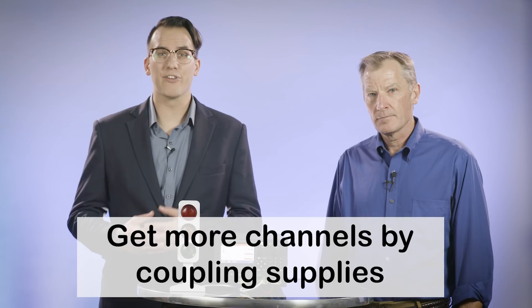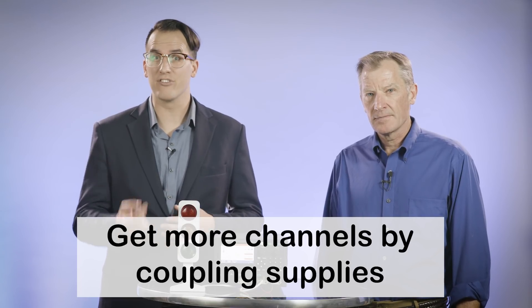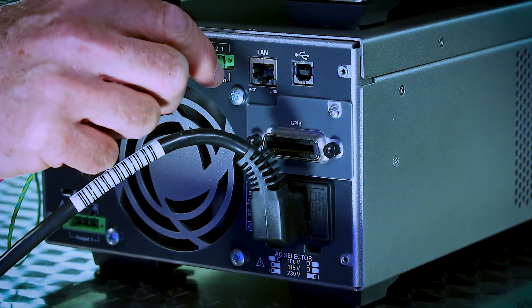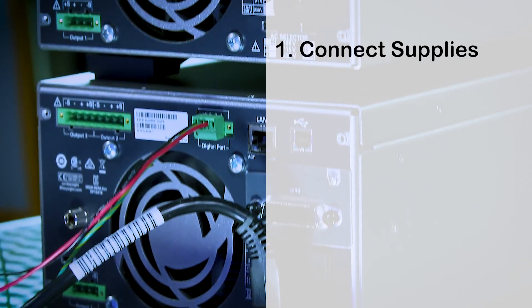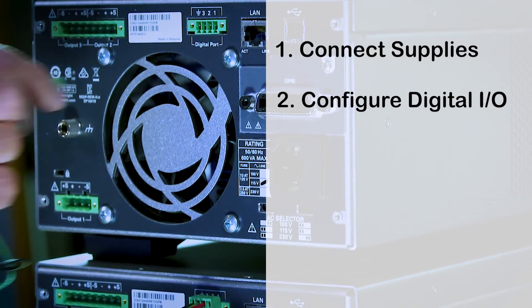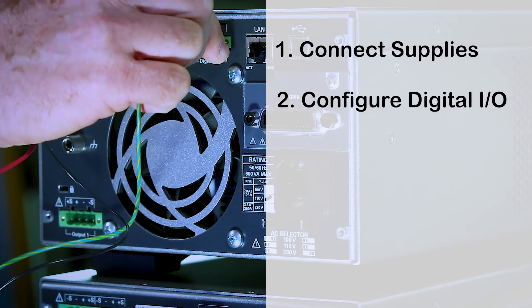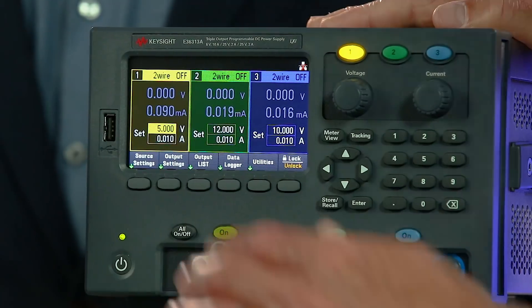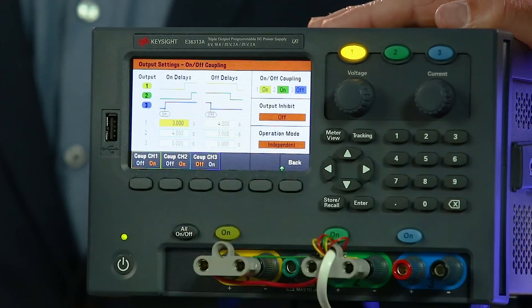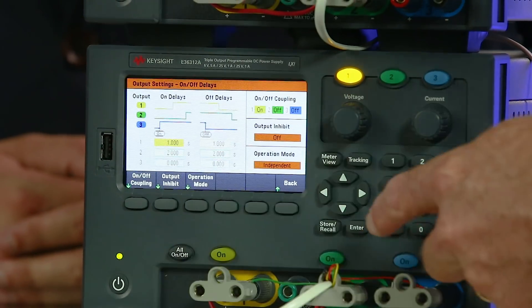What if you need more than three voltages? You can actually couple and sync multiple supplies together using the digital I/O ports on the back. Once we've physically connected the I/O pins, we'll have to configure the digital I/O port. The digital I/O port can be used for many different tasks. I will configure pin two and three of both supplies to be set to couple on and couple off.